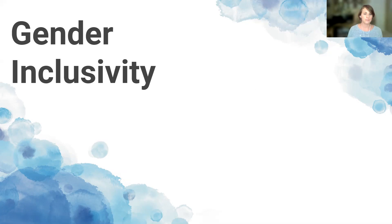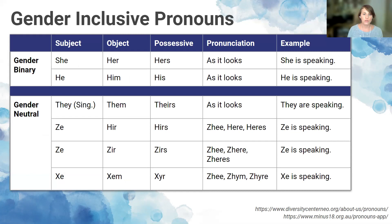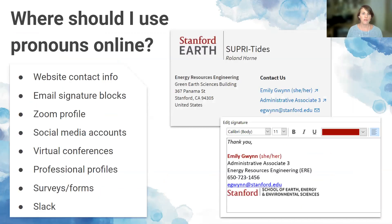A table shows binary and gender-neutral pronoun options: she/her/hers, he/him/his, and three different variations of ze pronouns — noting this is an incomplete list. Pronouns can and should be shared across all digital spaces: your website contact info, email signature, Zoom profile, social media, virtual conferences, professional profiles like LinkedIn, surveys or forms, and Slack.